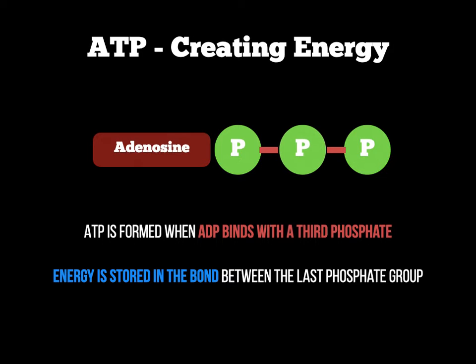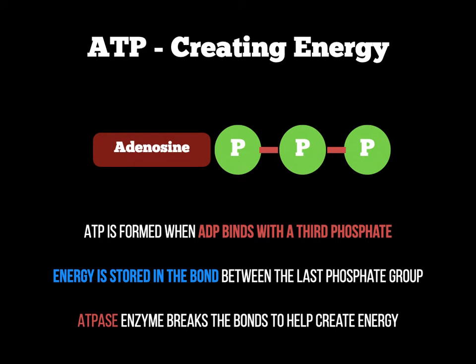The energy is stored within the bond of the last phosphate group. If you look at the green peas, they're connected by red lines — the red lines are the bonds. We're looking at the last phosphate and the last red line; that is where energy is stored when it's in the body and not being used. To contract a muscle, I need to release that energy. We use an enzyme called ATPase, which breaks off that last bond and creates energy to supply to the working muscle groups or wherever the body requires it.